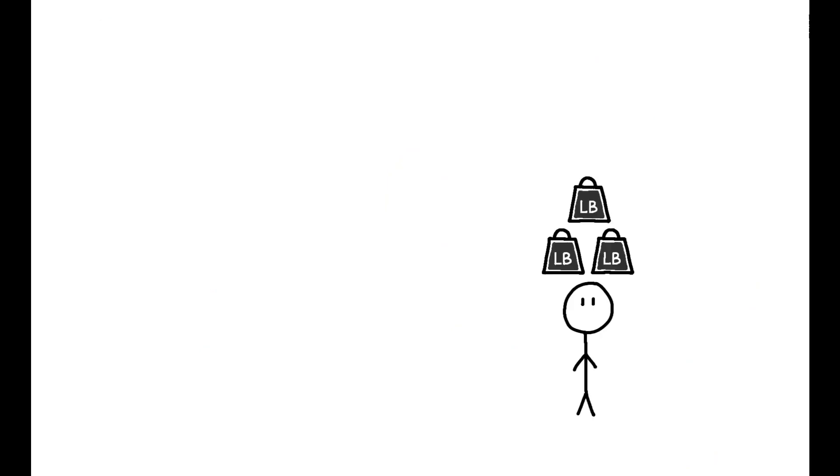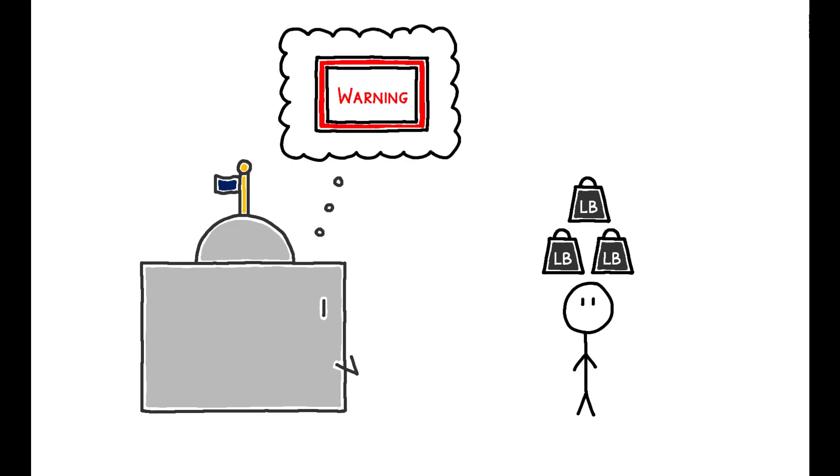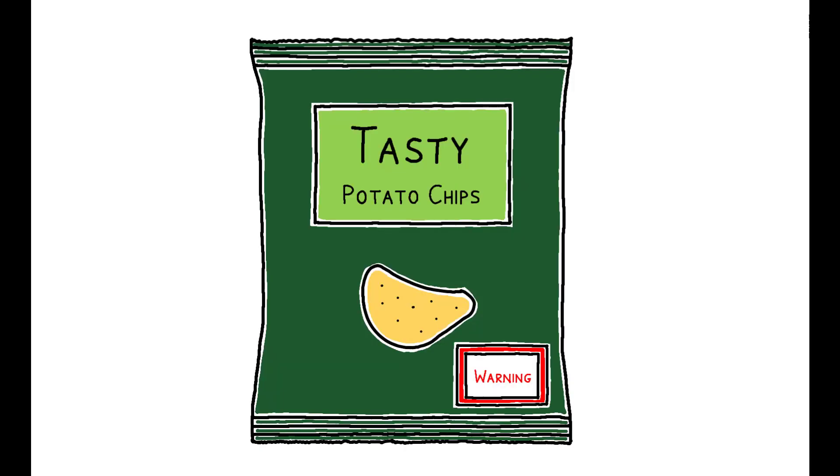This has sparked an urgent search for policy tools to combat obesity, and one increasingly popular option is front-of-package labels. These are visual warnings placed prominently on the front of packaged food items to signal that a product is considered unhealthy. Since 2016, such labels have become mandatory, or are in the process of being implemented, in over 30 countries.